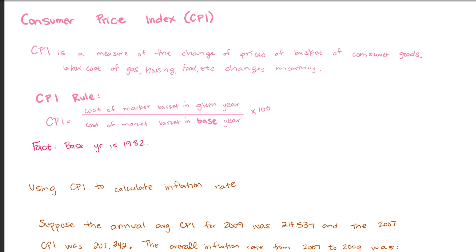So lastly, another topic that has to do with inflation is consumer price index. The CPI is the measure of the change in prices of consumer goods. So this is calculated monthly. They look at how much the price of gas has changed, housing has changed, food has changed. I recently moved out and I moved out at the end of May. That saved me $75 because the rent in June had an increase. So that is looking at the CPI. Now the rule for CPI that the Bureau of Labor Statistics uses to calculate it is the cost of the market basket in the given year divided by the cost of the market basket in the base year times 100.